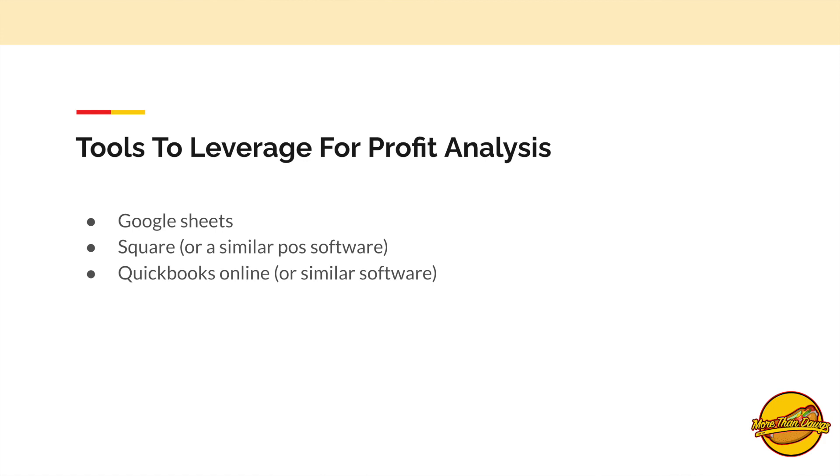Easily accessible tools to leverage for profit analysis. For us, we like to use Google Sheets, Square, and QuickBooks Online or similar software. Google Sheets is like the online version of Excel — it has a lot of capabilities and it's always getting better. You can get a G Suite account for as low as $6 a month, which comes with an email, an entire terabyte of data storage, and the entire suite of Google Slides, Docs, Sheets, and everything.